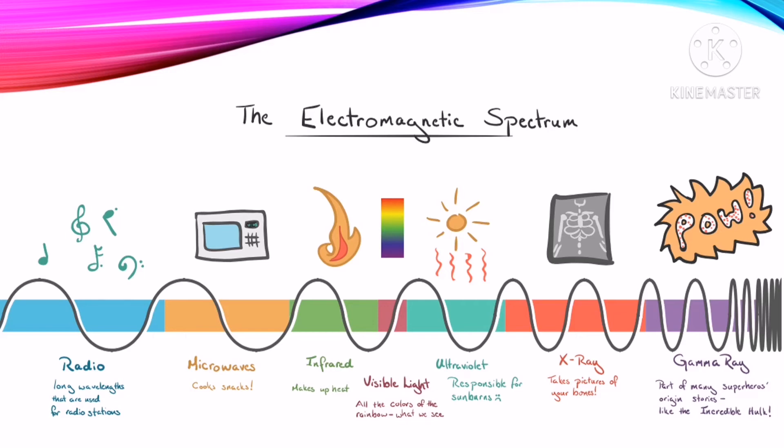Typically, lower energy radiation, such as radio waves, is expressed as frequency. Microwaves, infrared, visible, and ultraviolet light are usually expressed as wavelength, while the higher energy radiation, such as x-rays and gamma rays, is expressed in terms of energy.